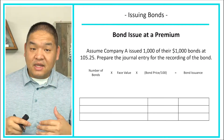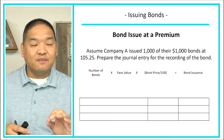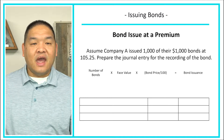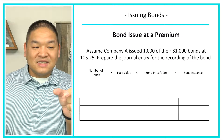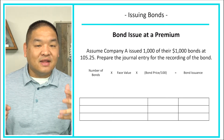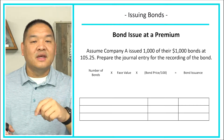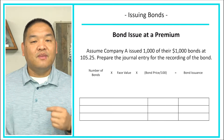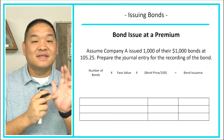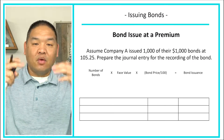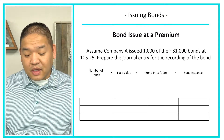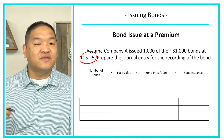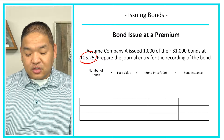People are willing to spend more money to get the 6%, up to the point where their effective interest rate equals the market rate of 5%. They won't pay so much that their return drops below what the market offers. So bonds are issued at a premium when the stated interest rate is higher than the market rate. Assume company A issued 1,000 of its $1,000 bonds at 105.25. Prepare the journal entry for recording of the bond.